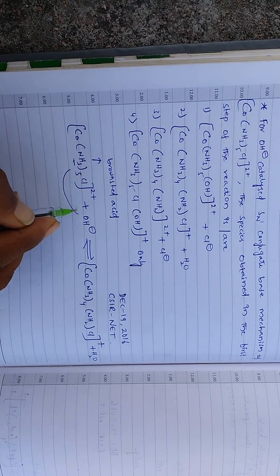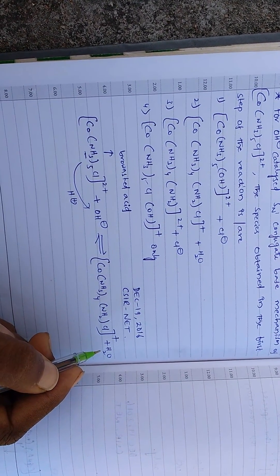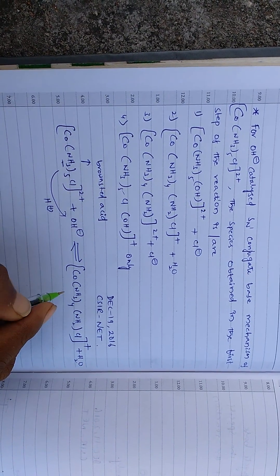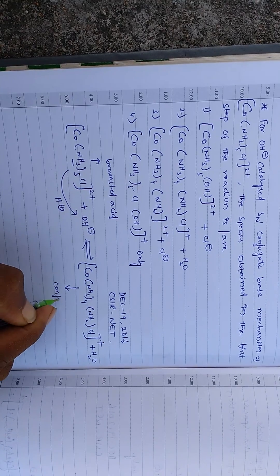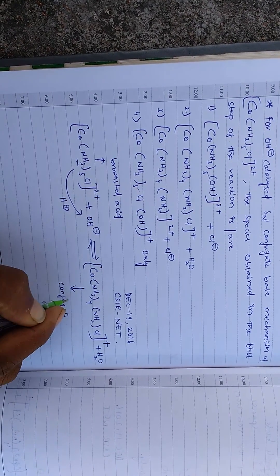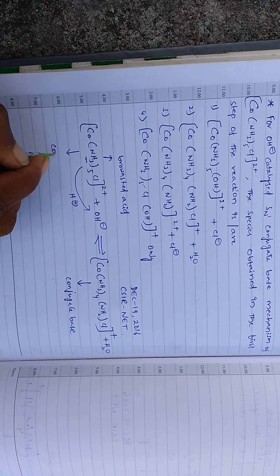That means it donated proton, H plus, to the OH minus and it forms water. And this is called the conjugate base and this is simply called the conjugate acid.